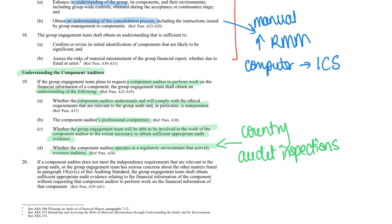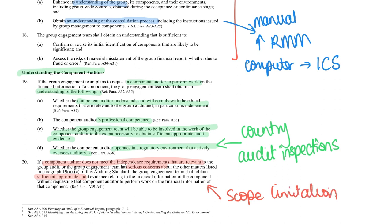What happens if the component auditor fails on one of these criteria? If we have a failure on independence or other serious concerns, we have to think: can we get sufficient appropriate evidence? If we can't get sufficient appropriate evidence, this brings up the possibility of a scope limitation.